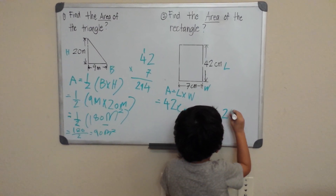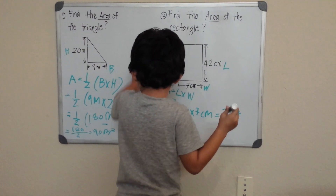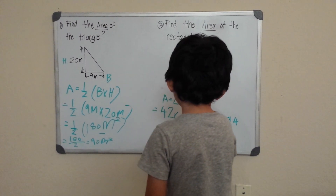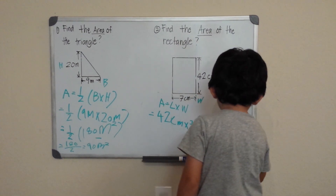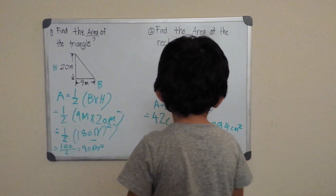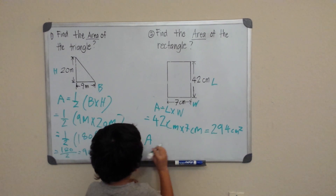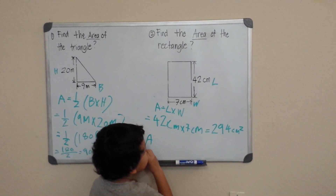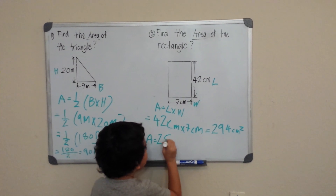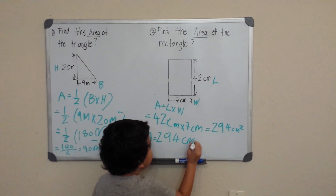294. So our area for this rectangle is 294 centimeters squared.